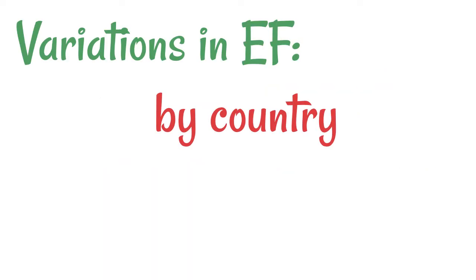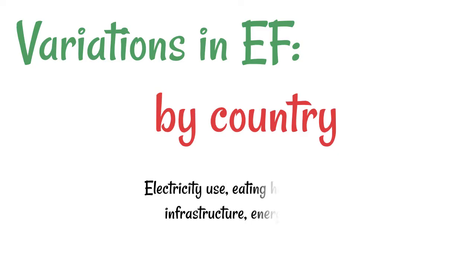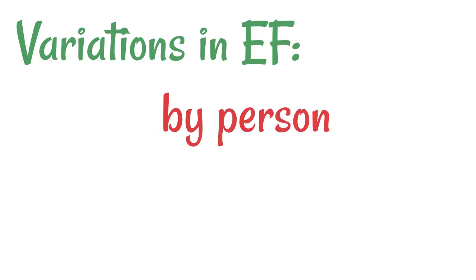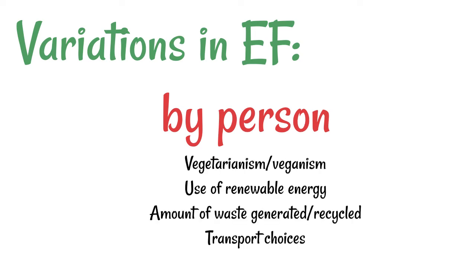There are a lot of variations in the ecological footprint. It can vary by country because in different nations there are different amounts of electricity use, different eating habits and transport methods — all sorts of different things that influence the average ecological footprint of a person in a country. It can also vary per person. You are not going to have exactly the same ecological footprint as your best friend. For example, vegetarianism has a big influence because that changes the amount of area required for the animals that you would consume.